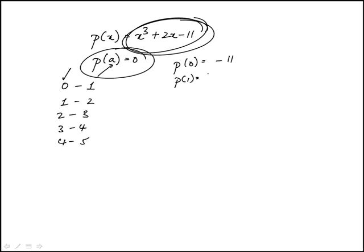p(1) is 1 plus 2 minus 11, which is -8. p(2) is 8 plus 4 minus 11, which is 1. So we notice that it goes from negative to positive.